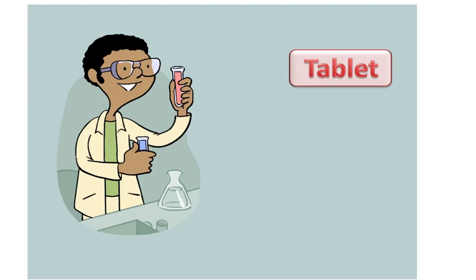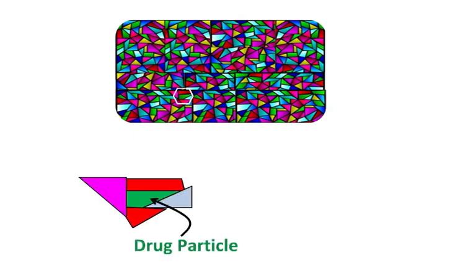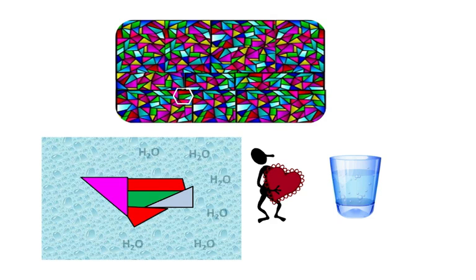Fortunately for us, the pharmaceutical scientists in charge of designing tablets use an ingredient called a disintegrant to help. Let's go back to the picture of the tablet as a stained glass window. Remember, the drug particles are the green pieces, which is what we need to separate from all of the other pieces after we swallow it. Let's imagine that the red pieces represent the disintegrant particles. These are made out of materials that love water, so much so that after you swallow a tablet, these disintegrant particles suck water into the tablet from the fluids in your gastrointestinal tract, and that's when they get down to business.